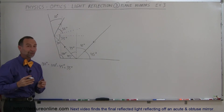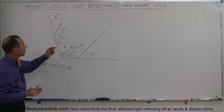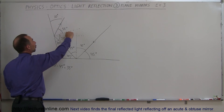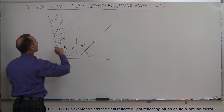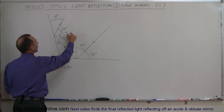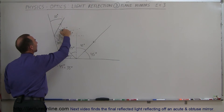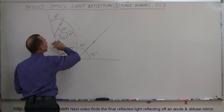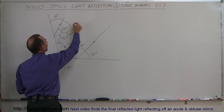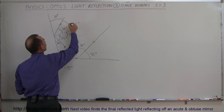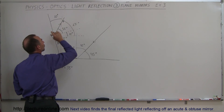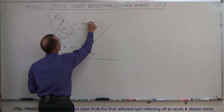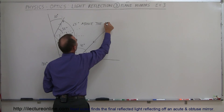Finally, how do we express the final direction of this exiting beam? We know it's 55 degrees above the normal, and the normal is 10 degrees above the horizontal line. When we add these two together, the direction of the final beam is 65 degrees above the horizontal.